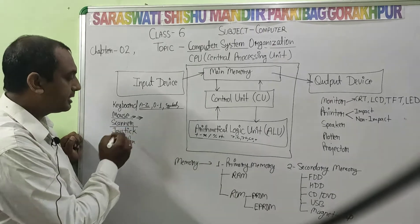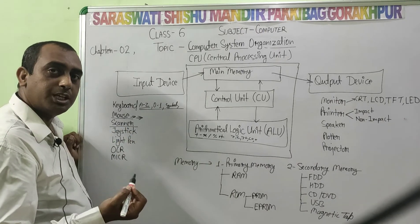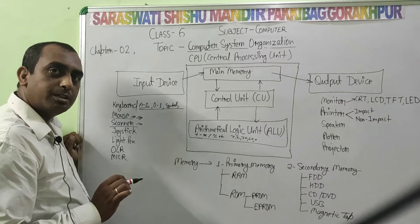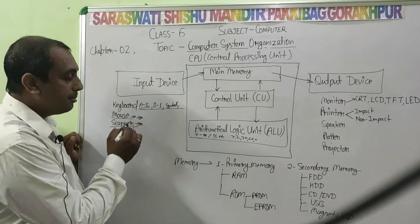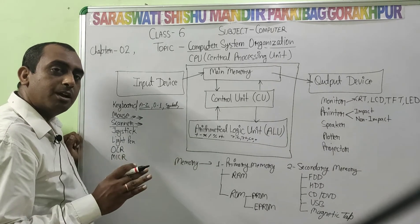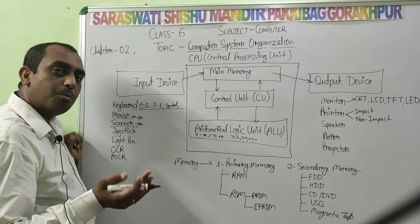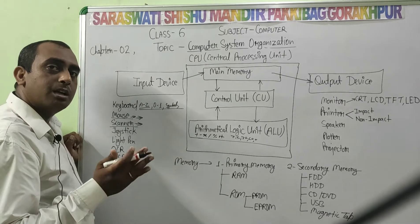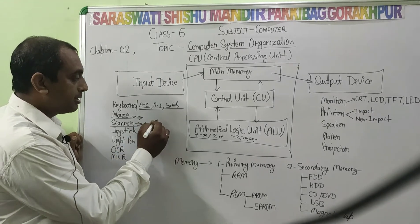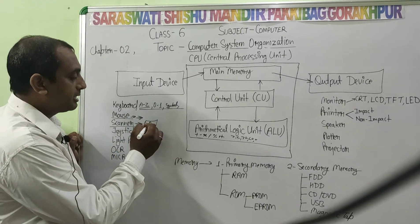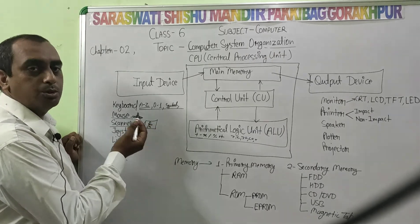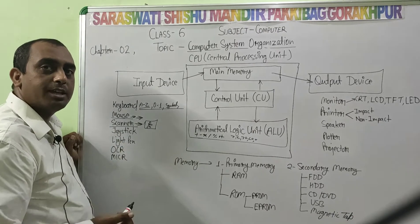What is a scanner? The scanner is a machine by which we can feed a hard copy into digital format. We can scan, copy, convert, and store content on the computer. If someone has a paper or a photo, we can scan it using the scanner and it will store in digital form on our computer.